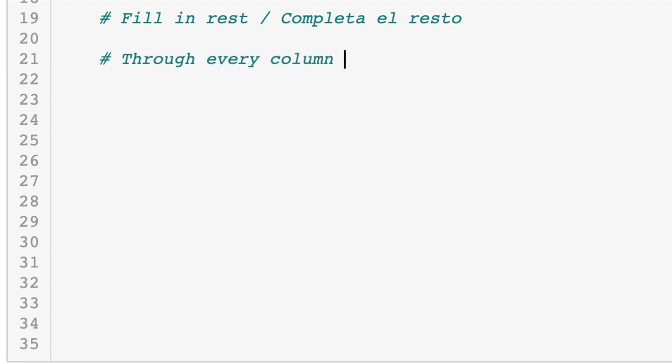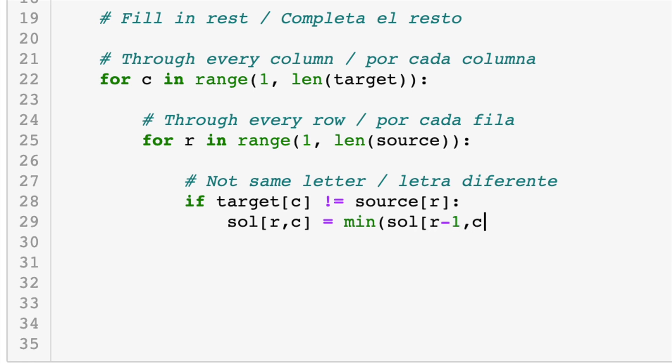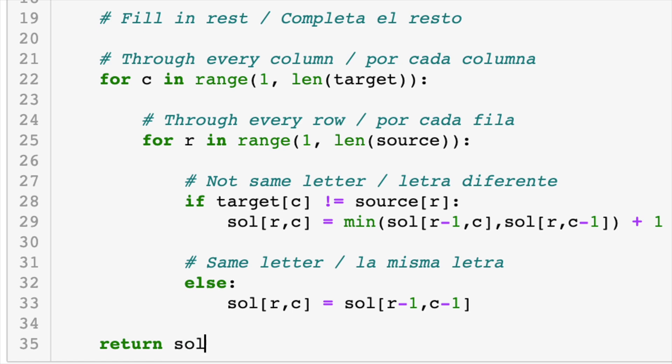Let's do this step in our Python function to fill in the rest of the NumPy array. We need to go through every entry, so through every column. For c, in range one to the length of target. Of course, we're skipping the zero row because we already filled that part in. Now through every row, for r in one through the length of source. Again, we have already done the zero row. So inside this double for loop, if the letter in the current column is not the same as the letter in the current row, then our solution at that row and column is equal to the minimum of the value above, so row minus one, but the same column, and the value to the left, so the same row but column minus one, plus one. If they are the same letter, we write else, and we say that our solution at that spot is just the value up one and to the left. So row minus one to get up one, and column minus one to get left one. Last, we return our array, sol. That is all the code we need.